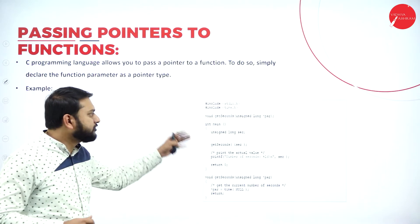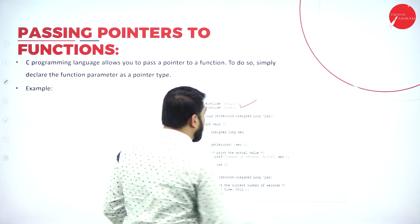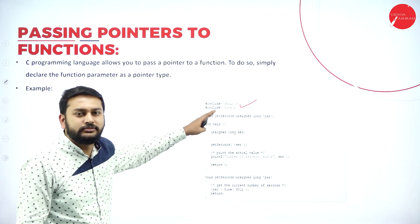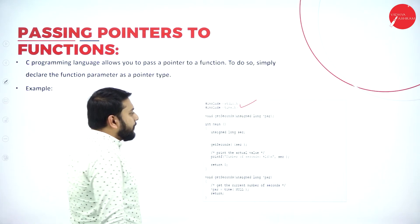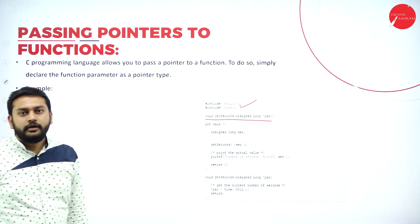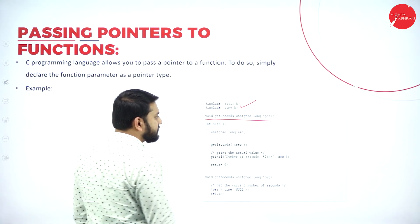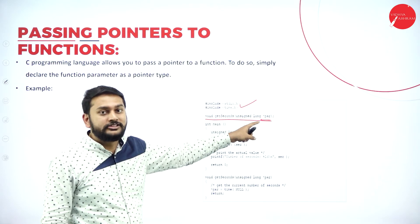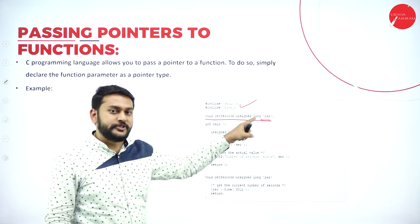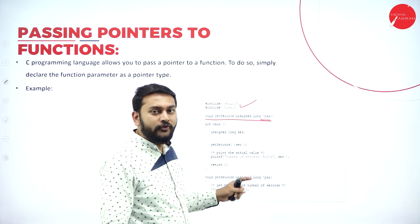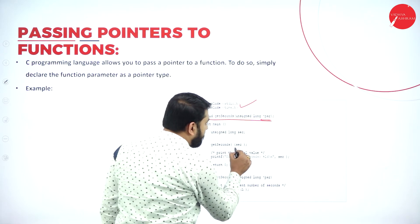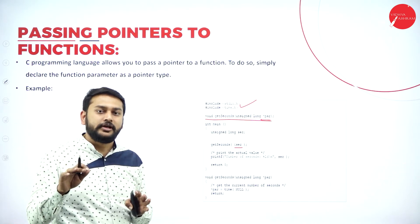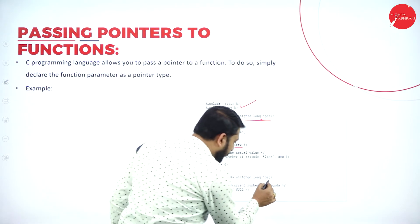Now, passing pointers to functions — how do I pass pointers to a function? I have a simple program with hash include stdio.h and time.h. In the function signature, I specify the parameter type as a pointer variable. That is most important — you have to specify this in the signature itself. Then in the function call, I pass the address of the parameter using ampersand.